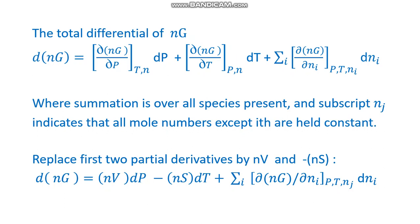Replacing the first two partial derivatives by nV and minus nS, we can write our equation as d(nG) = (nV)dP - (nS)dT plus Σi[∂(nG)/∂ni] at constant P,T,nj into dni.